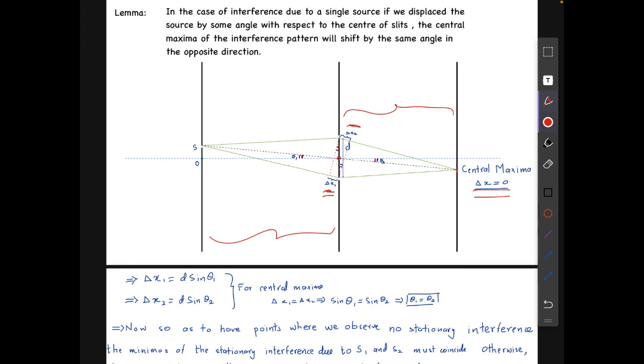Let's say the angle of the line joining source and the center of the slits with the central axis is theta 1, and that of central maxima joining with the central axis is theta 2. From here we get delta x1 equals d sin theta 1 and delta x2 is d sin theta 2. The proof of this is very trivial and you can do it yourself.